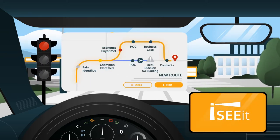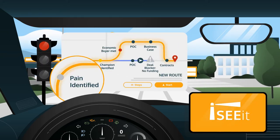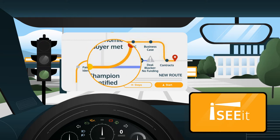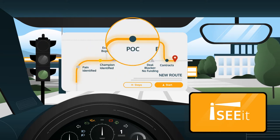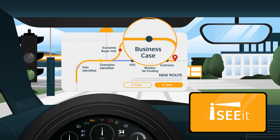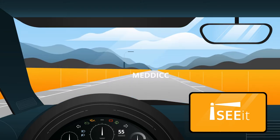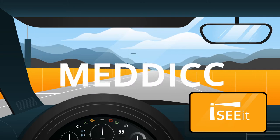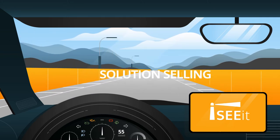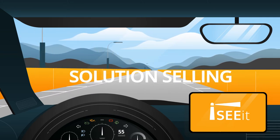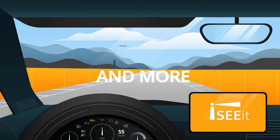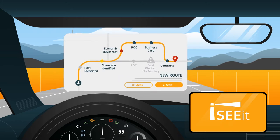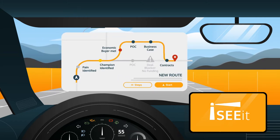Let iSeeIt's opportunity management tool get you on track. iSeeIt is a native Salesforce app that allows you to visualize any sales qualification methodology and fully configure your sales process based on your best practices, so that you can more accurately and consistently qualify opportunities and close deals.